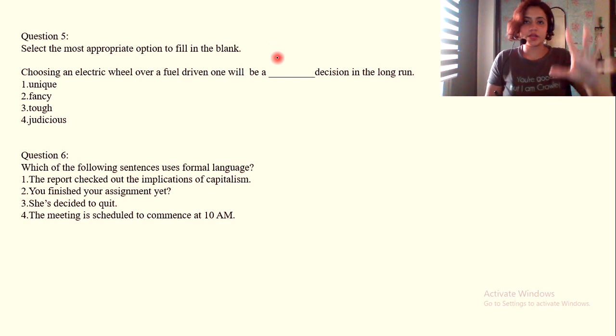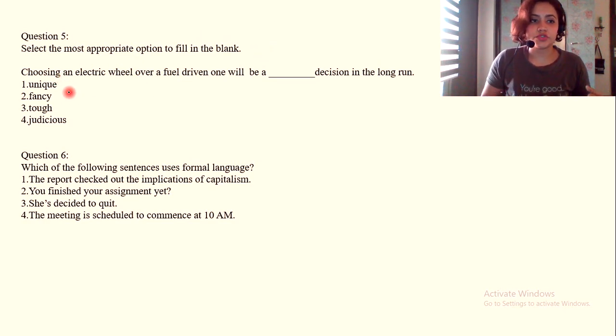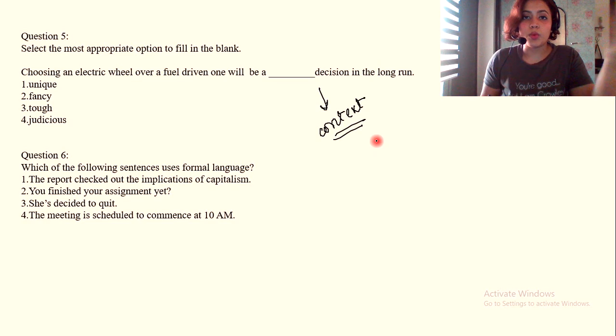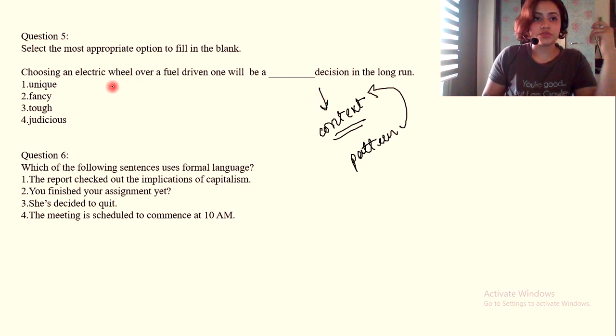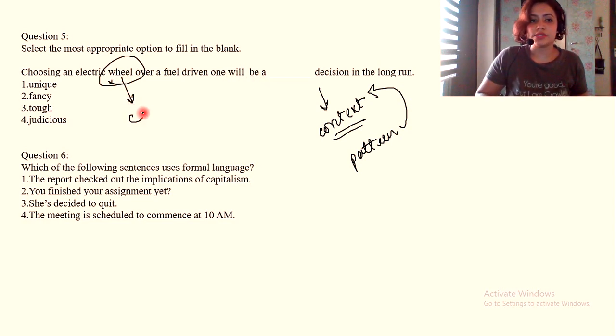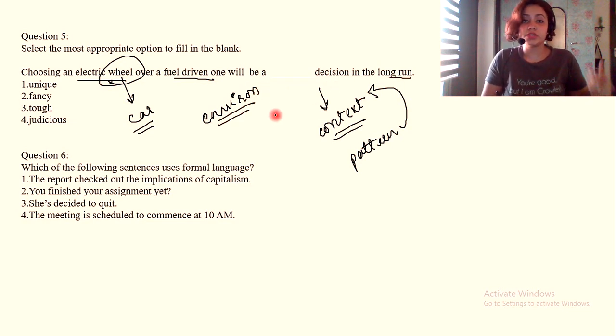Now a simpler kind of question. You just need to find out the correct word. Mostly they give you synonyms of words that are similar to each other, or maybe three are antonyms, one is not. You need to find the pattern through the context. Choosing an electric wheel over a fuel driven one, wheel here means a car, will be a dash decision in the long run.